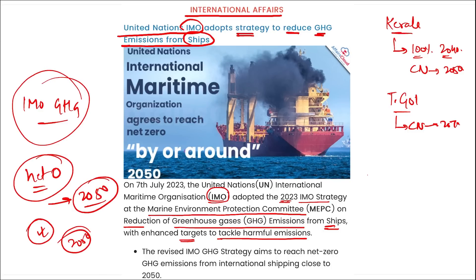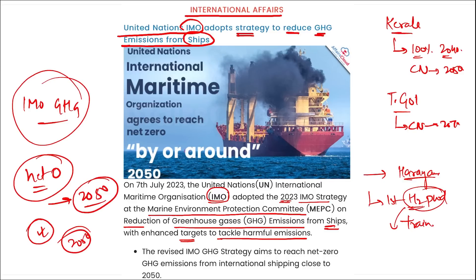The carbon intensity of ships is to decline through further improvement of energy efficiency. For example, hydrogen-powered trains running from Jind district in Haryana won't create pollution — burning hydrogen releases water vapors and heat but no carbon. Shifting to alternative fuels like hydrogen reduces CO2 compared to burning fossil fuels like petrol and diesel, which release harmful carbon into the atmosphere.